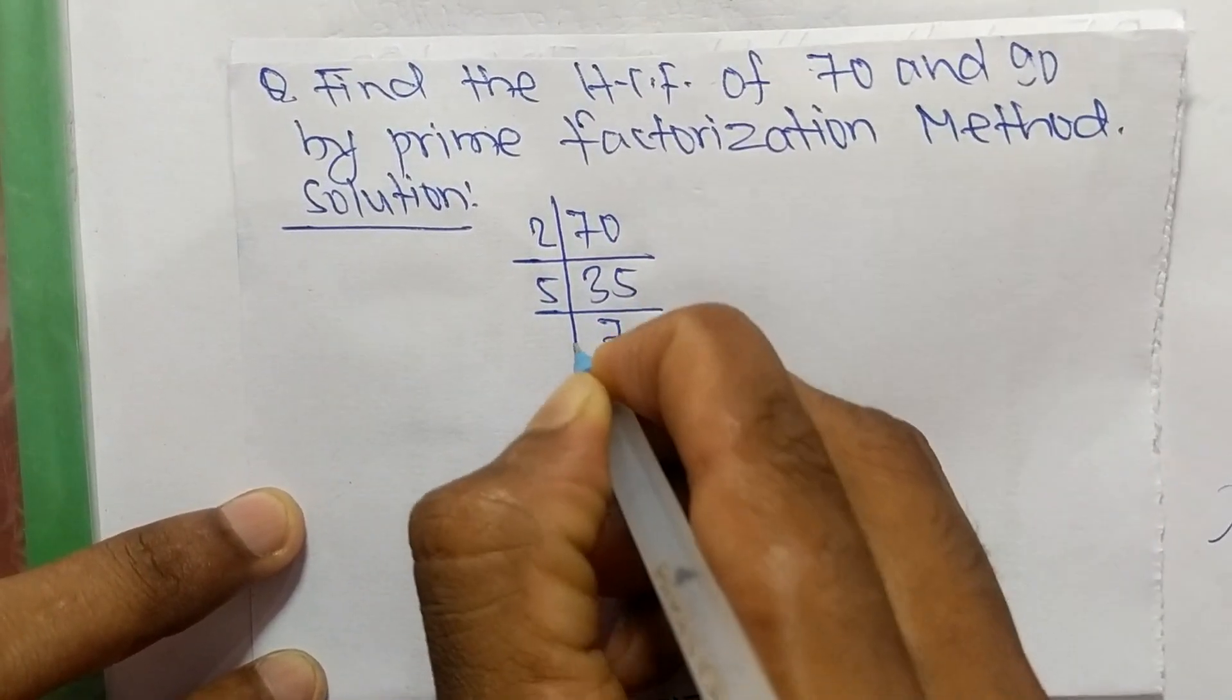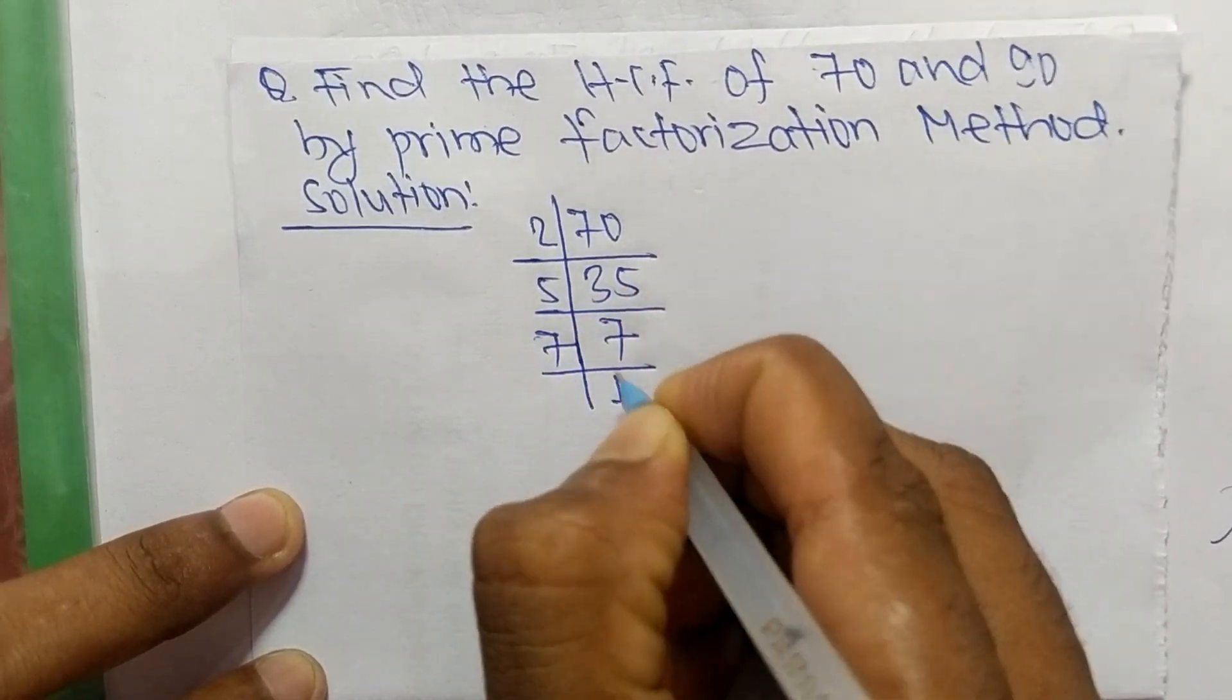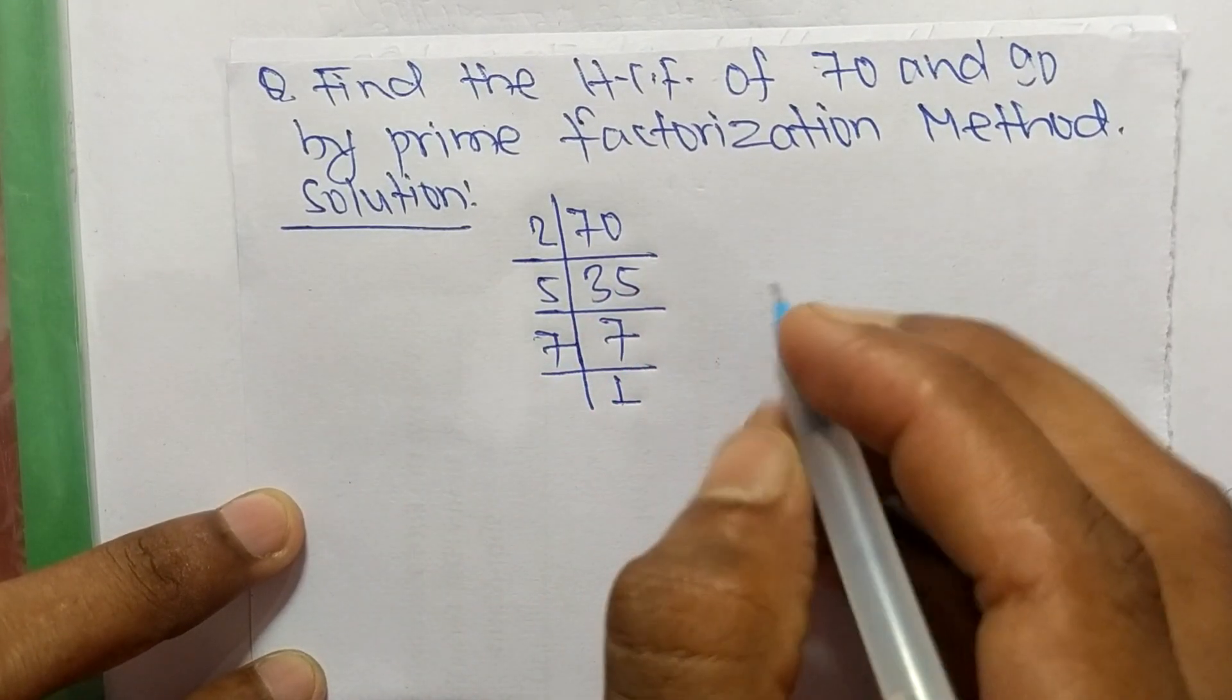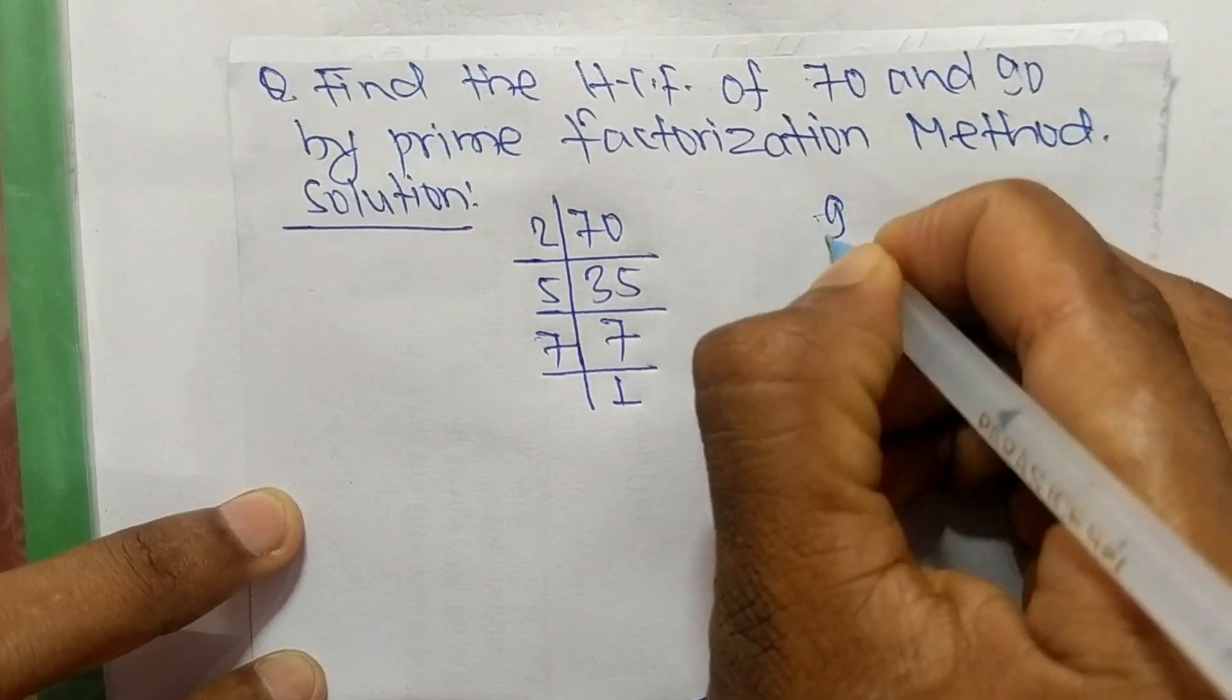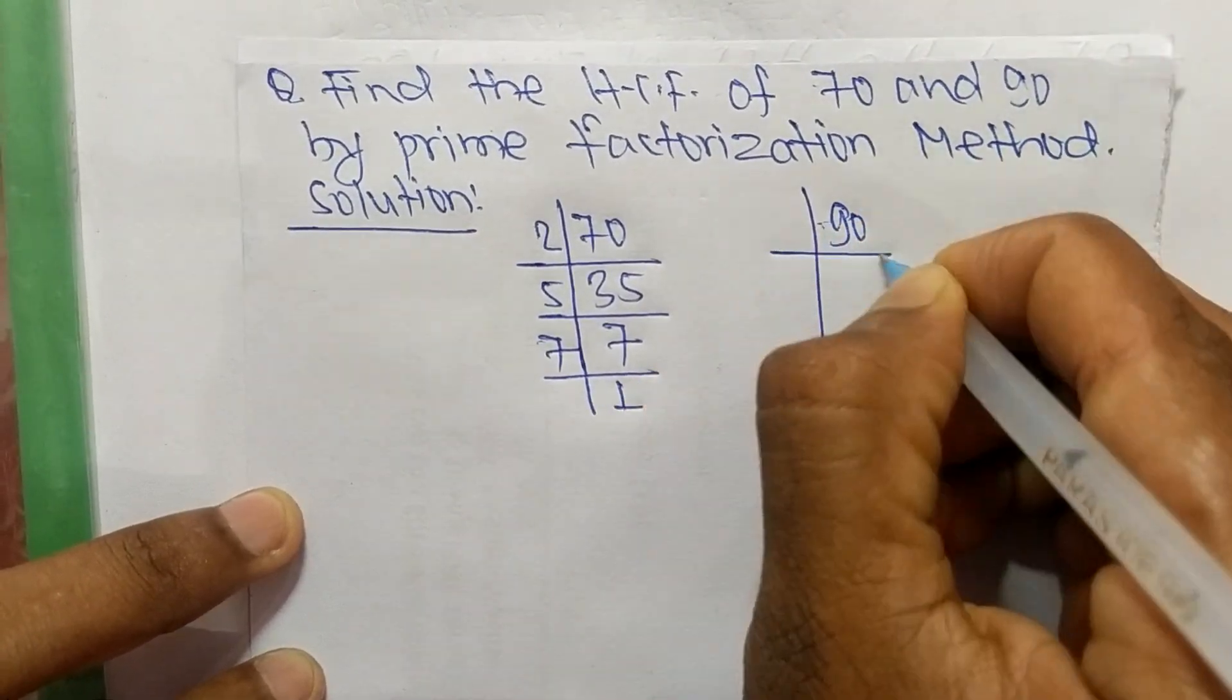And 7 times 1 means 7. Similarly, the prime factors of 90 are: it is 2 times 45 means 90.